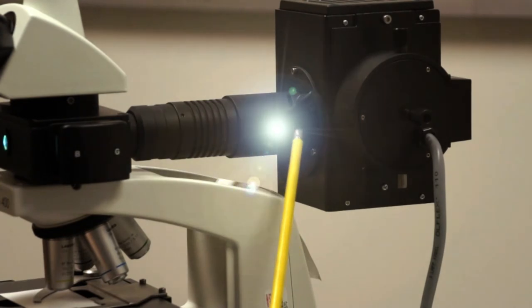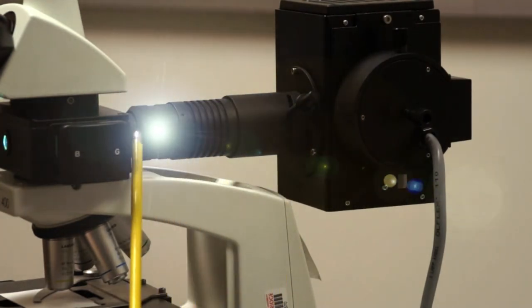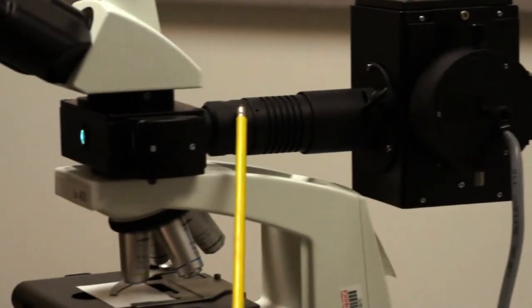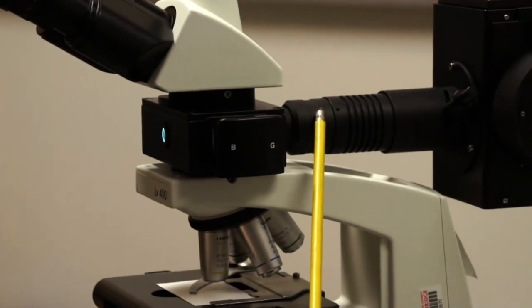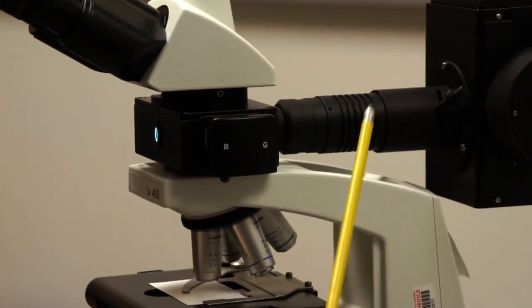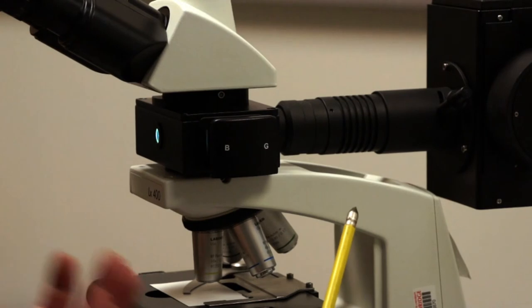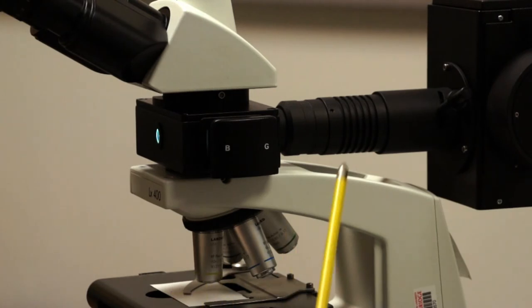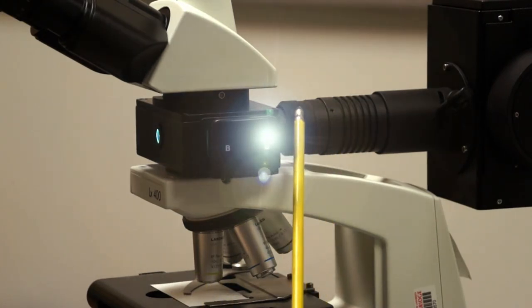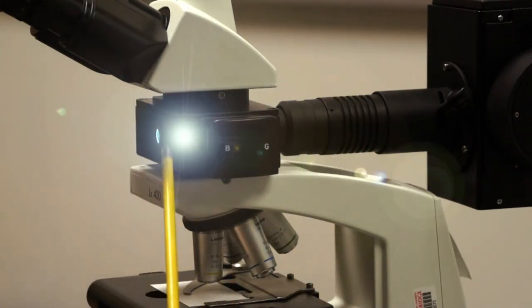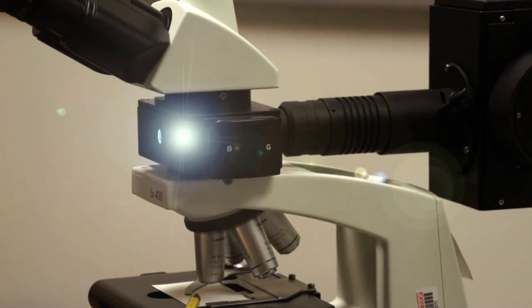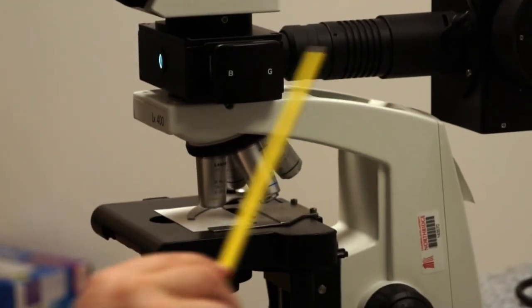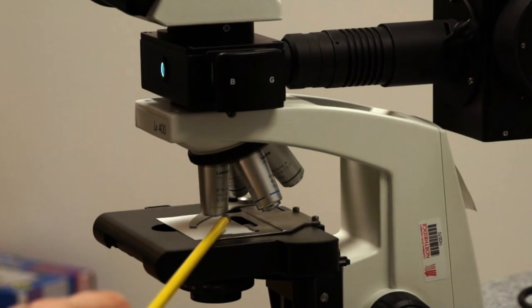But the light travels from the lamp house through the vertical illuminator. It goes through an excitation filter, which is a specific color that's used to excite our fluorophore, which we'll discuss more about later. And you'll see this color in a second. It goes through the excitation filter.